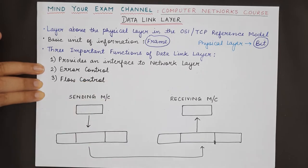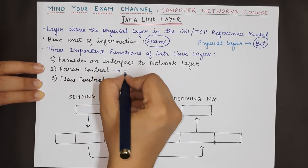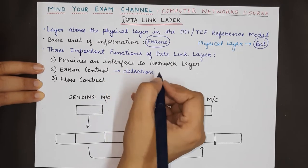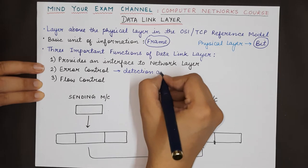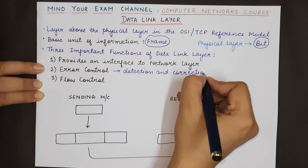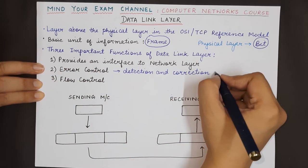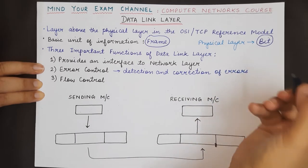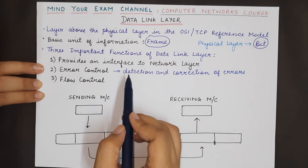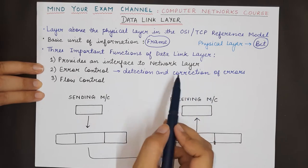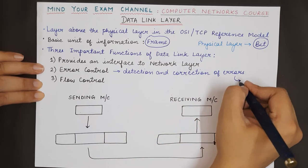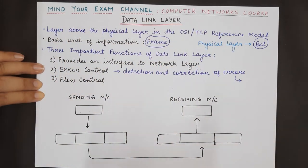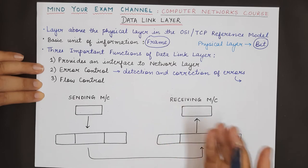Error control basically refers to the detection and correction of errors. Errors might occur while transmitting data and information through the channel and through different layers. Detection and correction of transmitted errors is what is referred to as error control in the data link layer. In some cases the data link layer may only provide detection capability, and in some cases it may provide both detection as well as correction capability of errors.